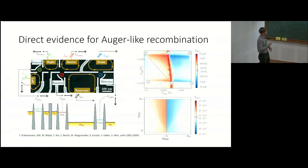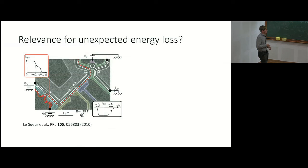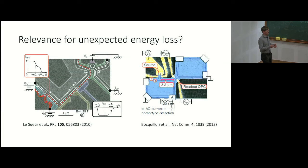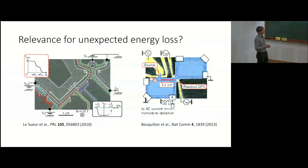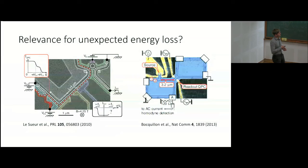Coming back to the introductory slides: since we now know that finite-range interactions can excite electron-hole pairs in remote parts of such devices, it is not inconceivable that the non-equilibrium distribution loses energy when it passes pinched-off contacts in those earlier experiments. And where it has been shown that the interaction is finite ranged, it is not inconceivable that energy is lost to other channels in the sample that are not controlled in the experiment.